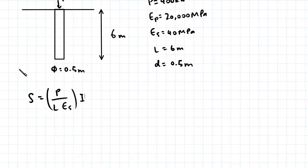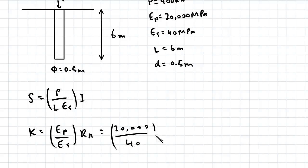So first we need to find the stiffness factor K which is equal to EP over ES multiplied by RA and that's 20,000 megapascals divided by 40 megapascals multiplied by RA which is 1 because we have a solid pile here. And this works out to be 500.